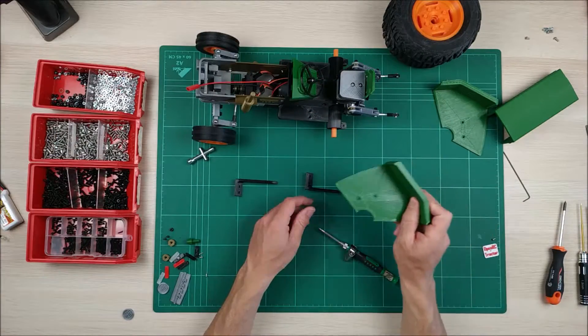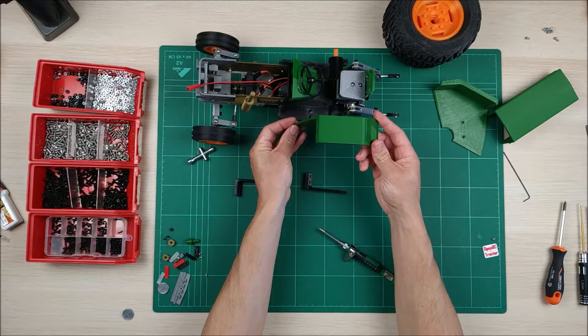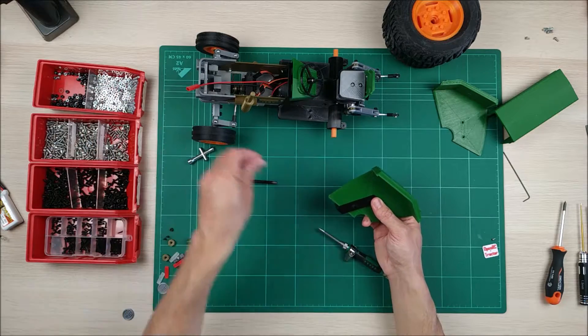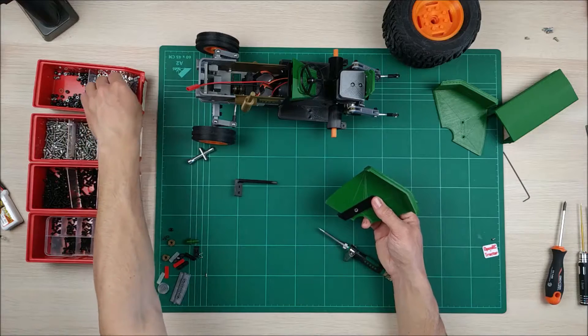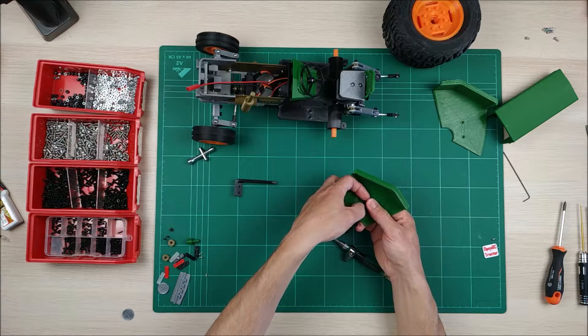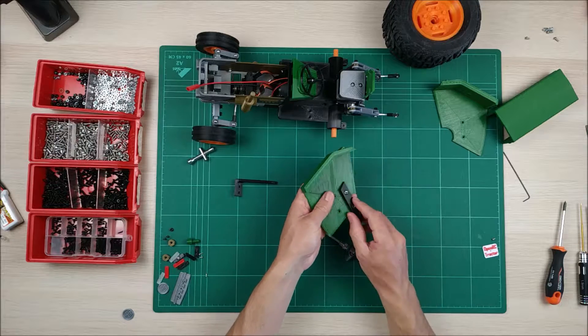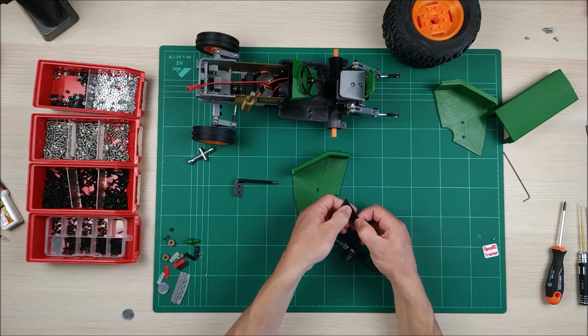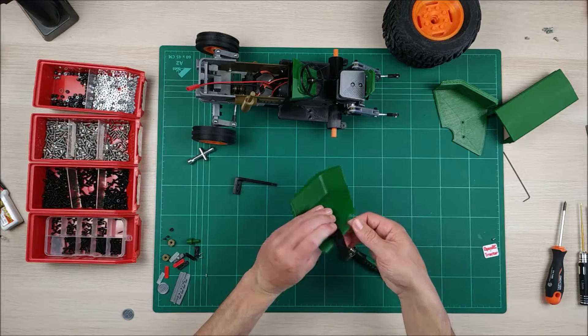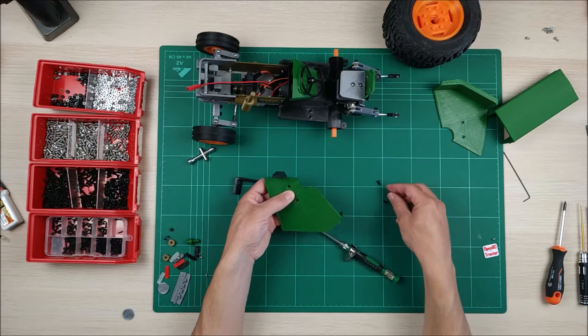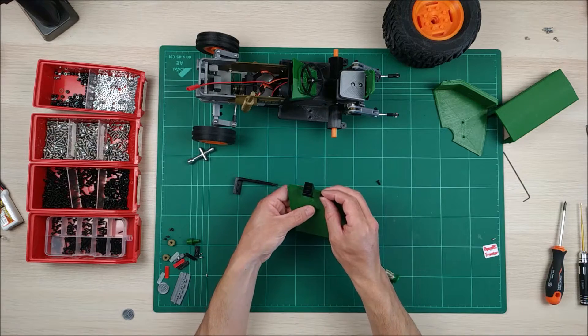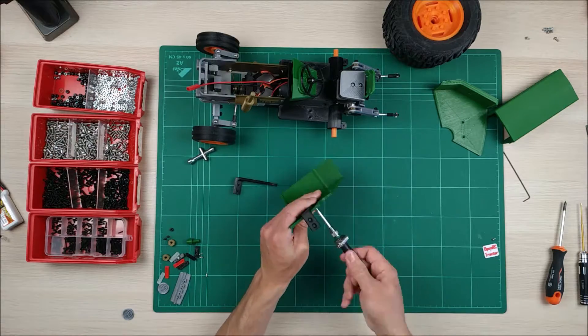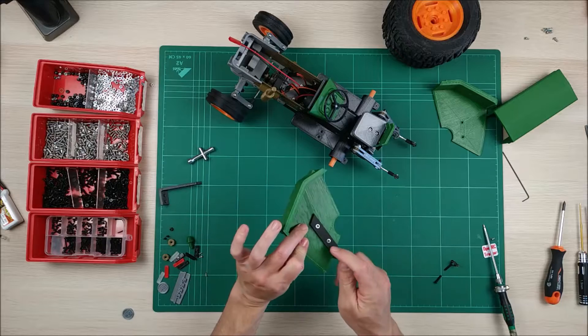Next, we are going to go with the fenders. This one is the left one, and this is going to go like this. We are going to use M3 normal nuts here. And now we are going to use these countersunk 8mm here. Now that we have the fender with this piece, now we are going to insert this.